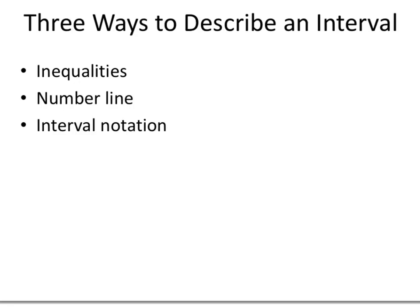When we're talking about an interval, typically we're talking about the numbers between two given numbers. One way I can describe an interval with inequalities would be to say 3 is less than x is less than 7. So I'm talking about all of the numbers between 3 and 7, but not including 3 — because this is a less than sign, not a less than or equal to sign — and also not including 7 for the same reason.